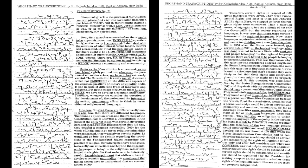So, in 1956, when the states were formed to a certain extent on the basis of language, what was done was not to have a state with cent per cent people belonging to the regional language because they were bound to be people belonging to different languages. That was the reason why this question was considered at great length and the States Reorganization Commission also went into this question of linguistic minorities.